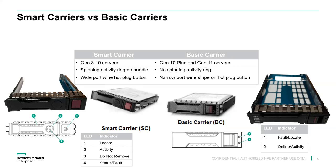Even though the activity ring went away, both the Smart Carrier and Basic Carrier provide the same indicators: location ID, activity, failure, and drive status. If you go through the QuickSpecs and see 'SC' or 'BC' listed in the description of a drive, that refers to Smart Carrier or Basic Carrier respectively.